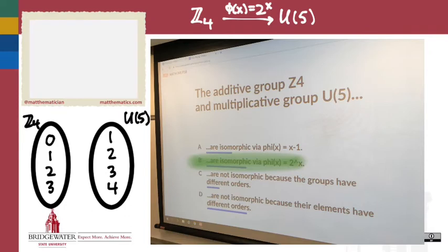Zero and one have the same order. What I want to do actually is be more specific here. I want to use 2^x. But you're right that if this is an isomorphism, it has to relate elements that have the same order. And sure enough,